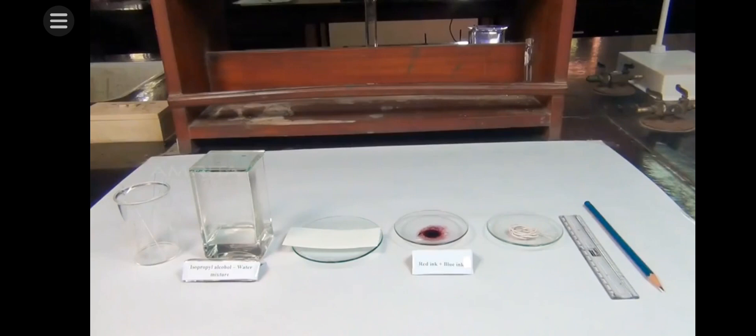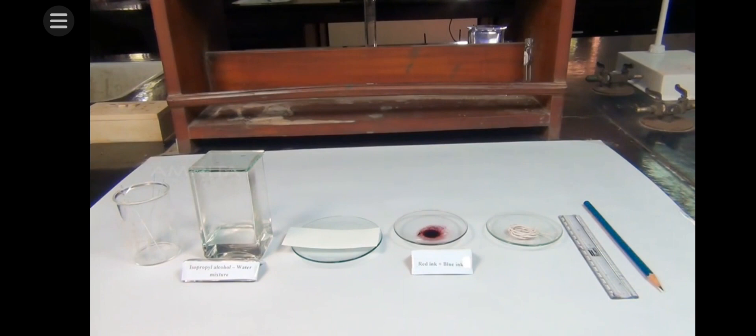When a mobile phase is moved over the mixture on the stationary phase, the components of the mixture gradually are separated from one another. Our aim here is to separate the components from a mixture of red and blue inks by paper chromatography.